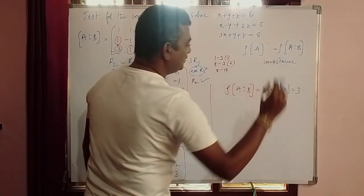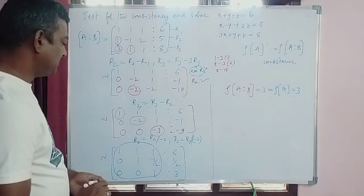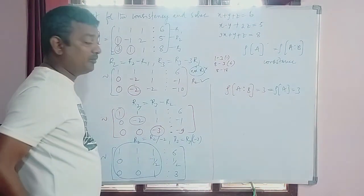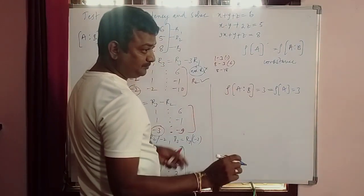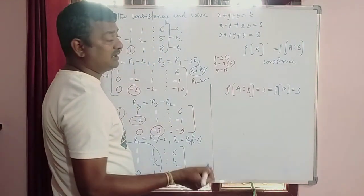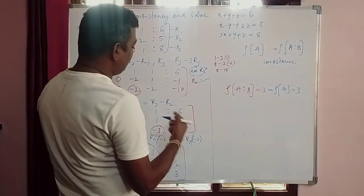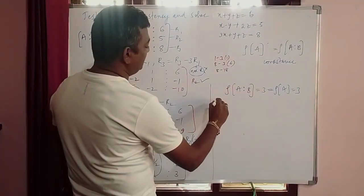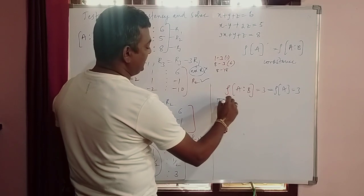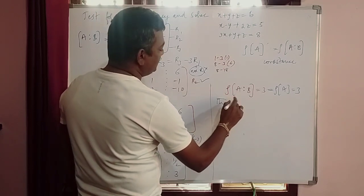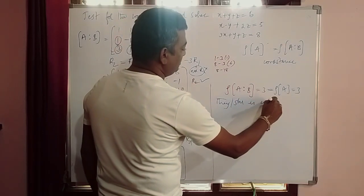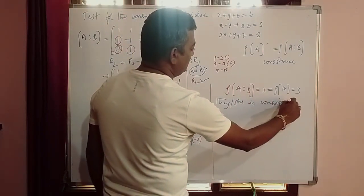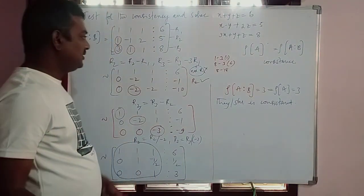So therefore both are equal. Rank of A as well as rank of augmented matrix are equal. What is your inference? What you can say here is they are consistent. System is consistent.